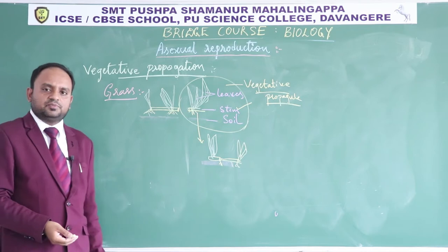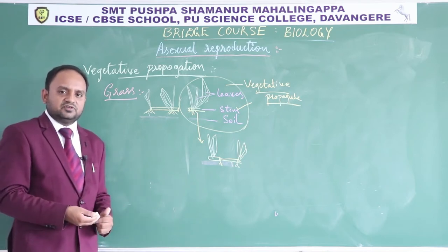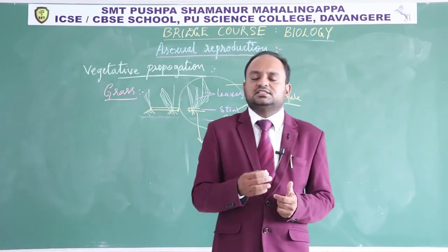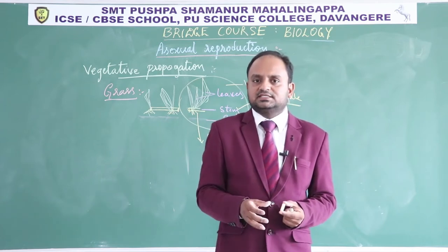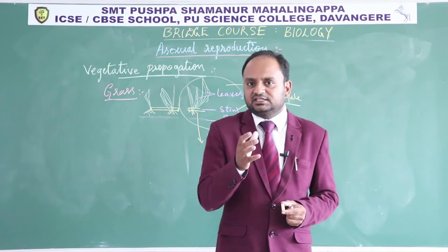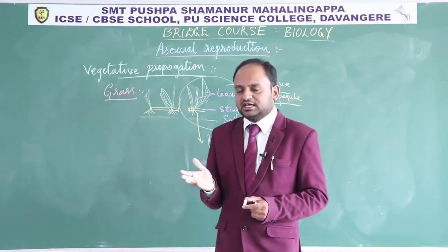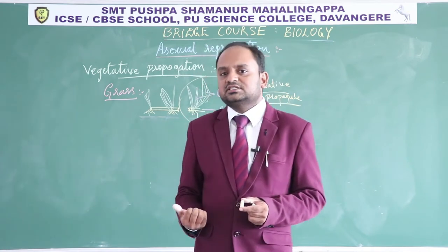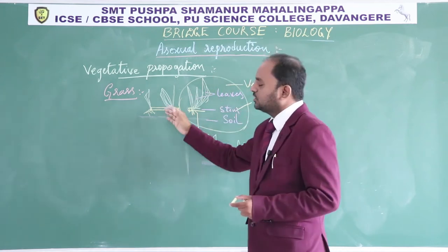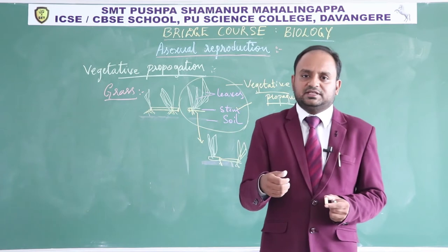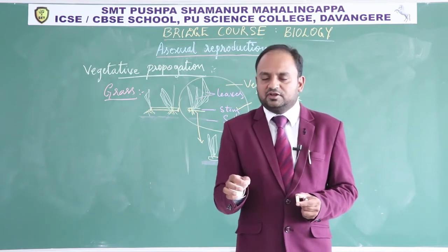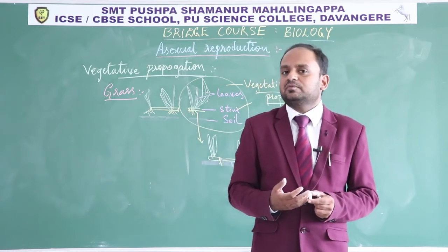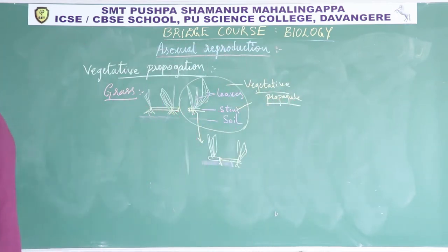In your PU classes you will study different examples involving classification of the stem based on habitat and its modifications, along with different types of vegetative propagules and their examples. Another common example is ginger — the cut piece of ginger containing a node, when separated and put into soil, generates a new plant. So all these are examples of vegetative propagules in the plant kingdom.